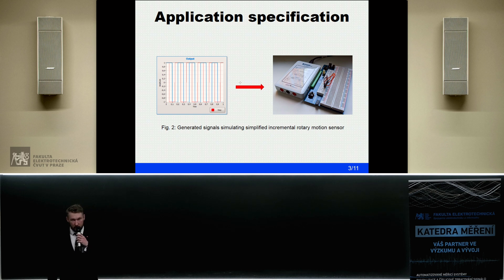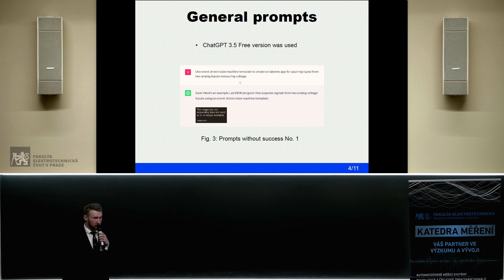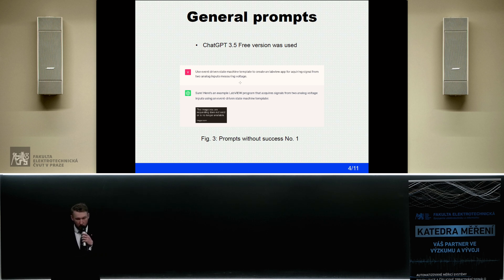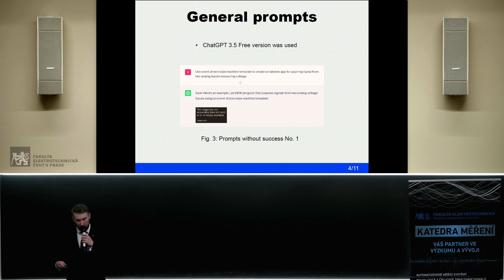I began asking ChatGPT to help me create this kind of application. I started with some general prompts. I also forgot to mention that I used the free version of ChatGPT 3.5. The first question was quite general: to use an event-driven state machine template to create a LabVIEW app for acquiring signals from two analog inputs measuring voltage. ChatGPT was willing to help, but as you can see, it was of no use because the picture was unavailable. I tried it multiple times differently with the same results.